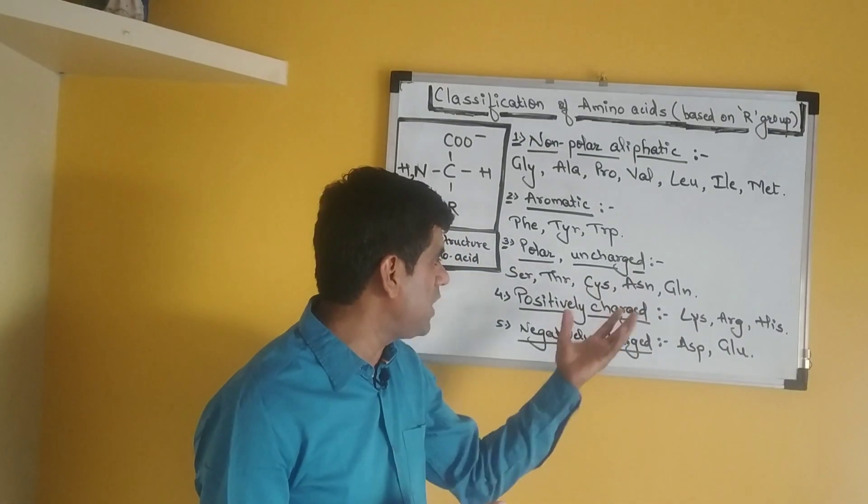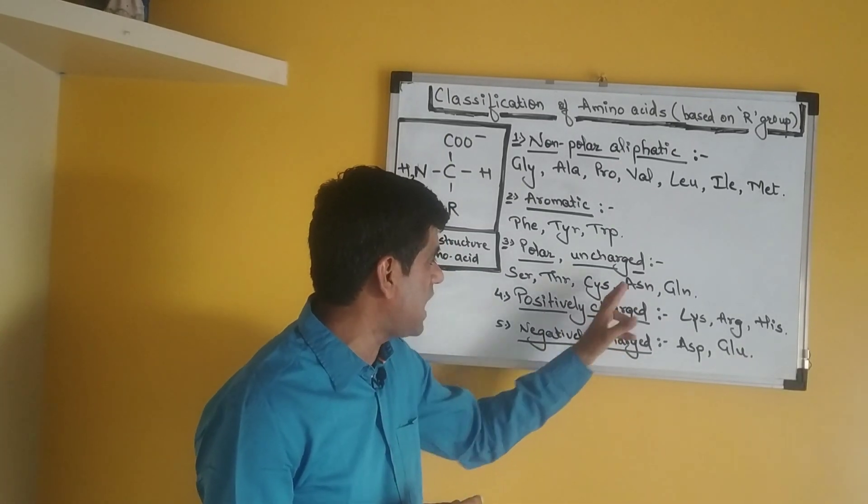Then you have asparagine and glutamine whose polarity is because of the amide group. Asparagine and glutamine are the amide forms of the amino acids aspartate and glutamate.